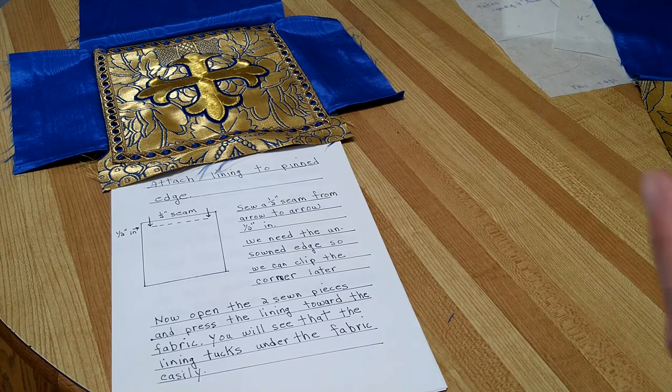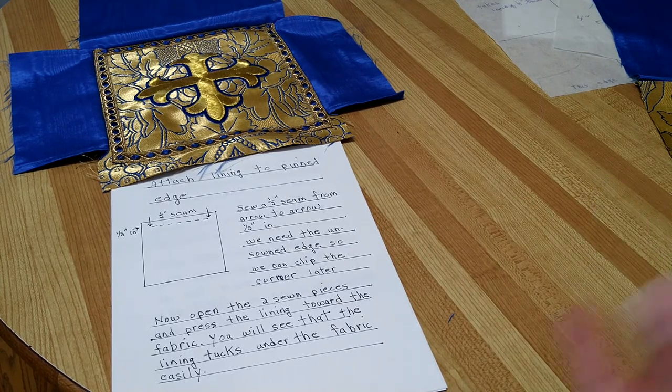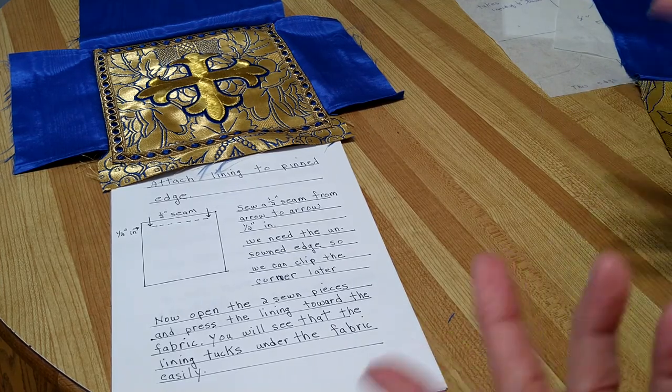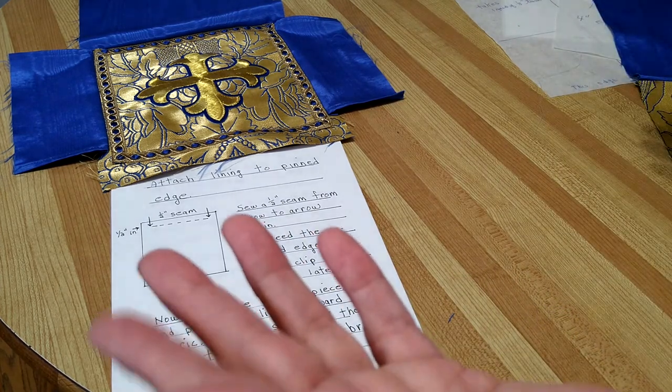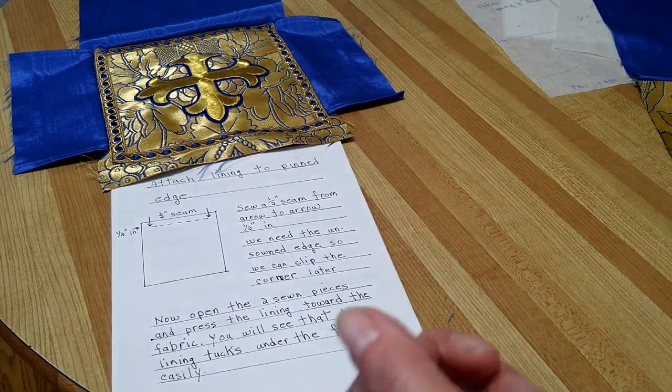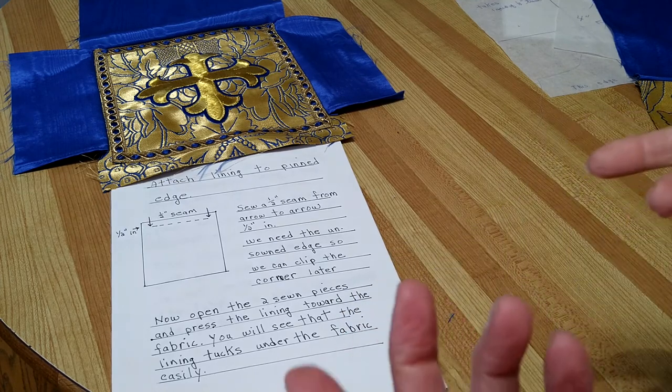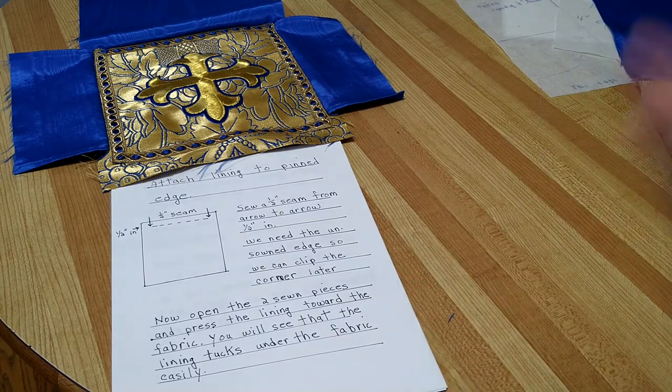Don't forget that half inch on each side because if you make a mistake and you've gone to the edge of that piece, when you go to clip it and take the bulk out of the corner, it's going to come apart when you turn it.